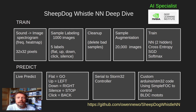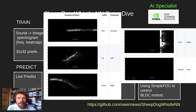We're recording it as 32 by 32 pixels because smaller images are quicker to train. We then label the well-known whistles with either flat, up, down, click, or silence labels.